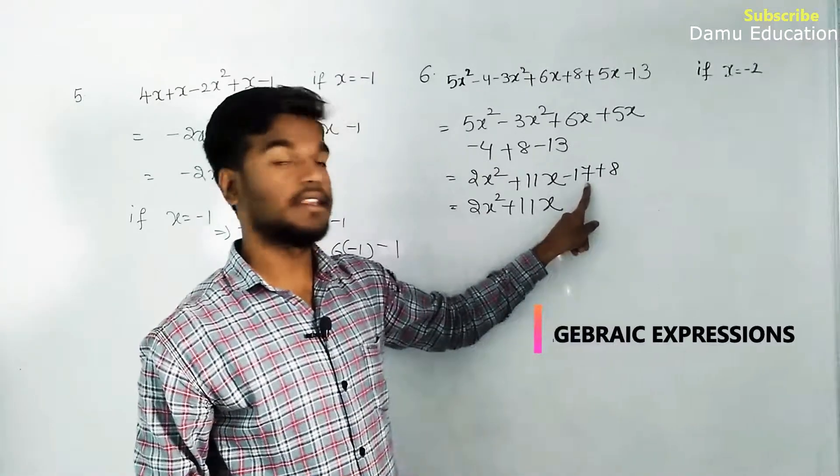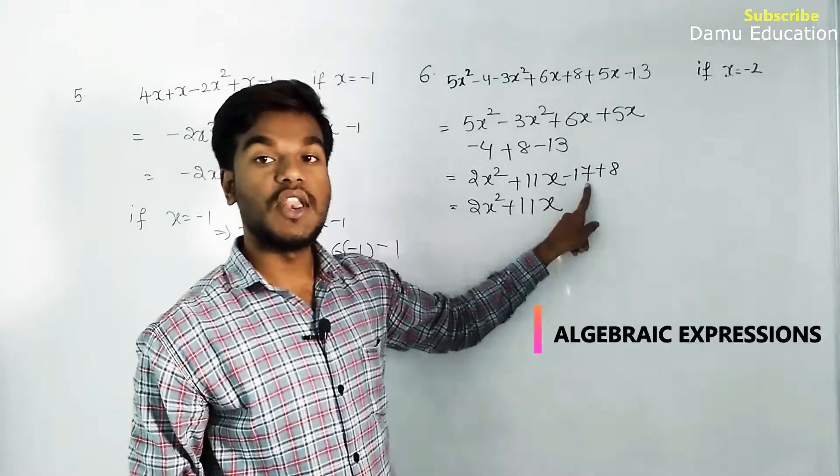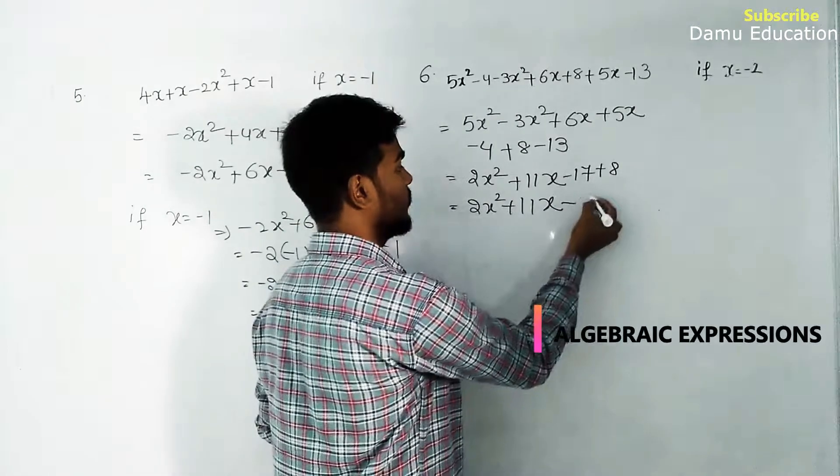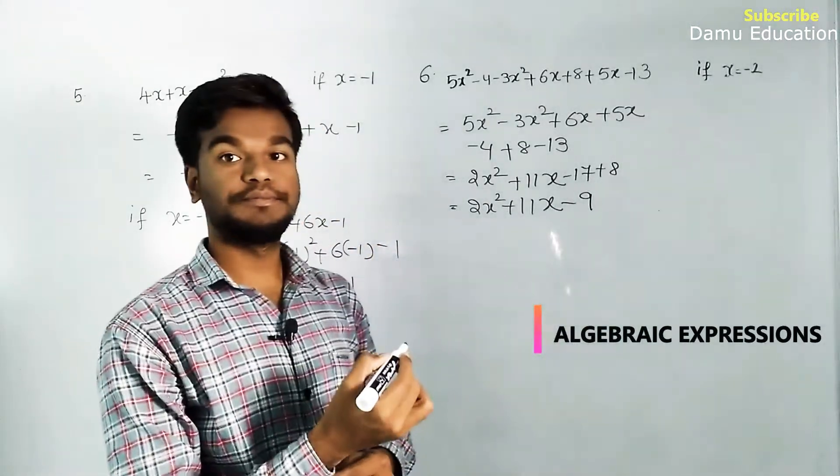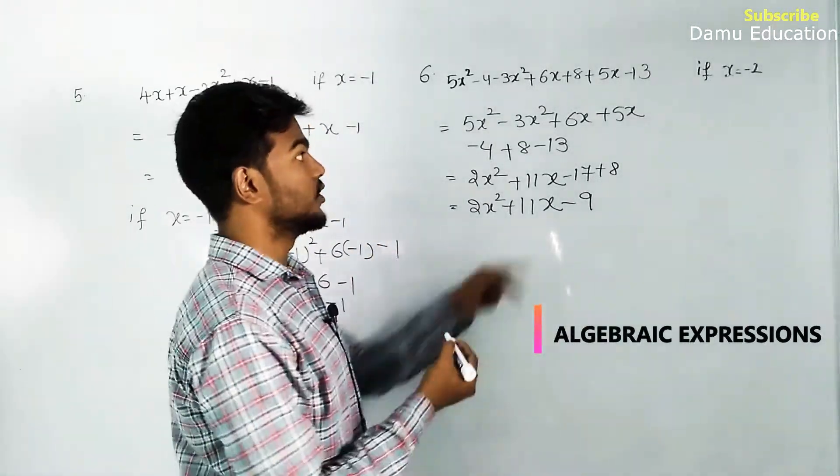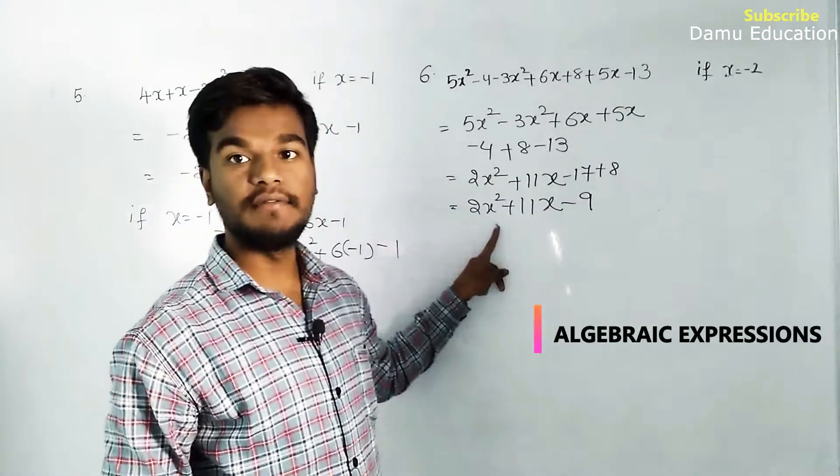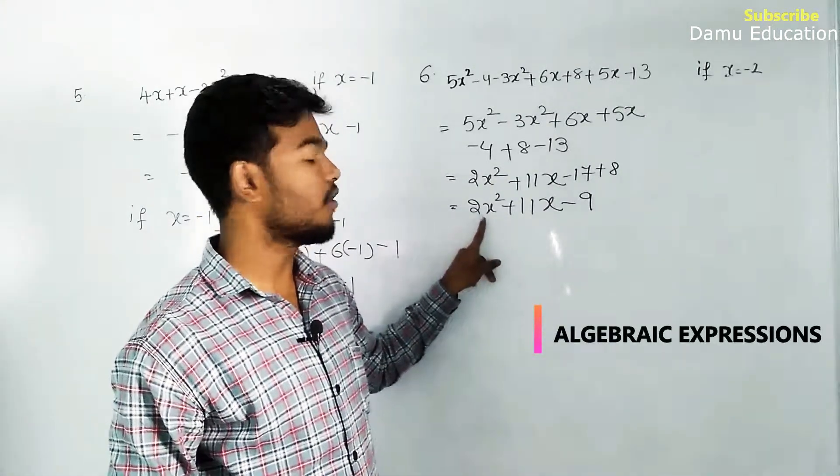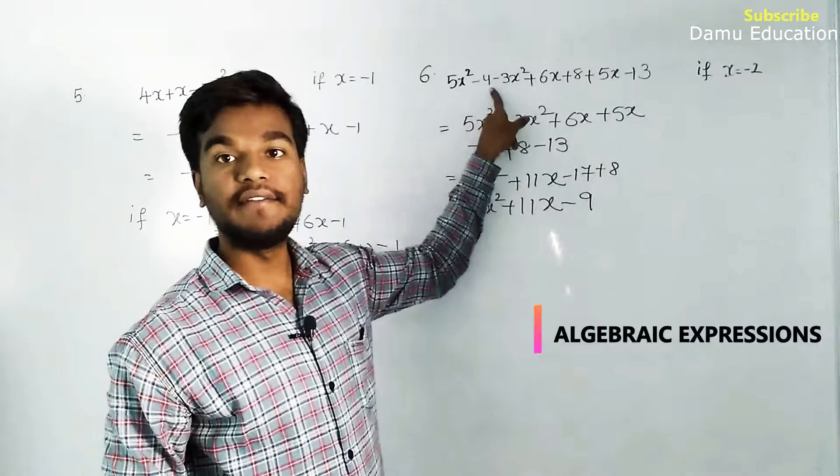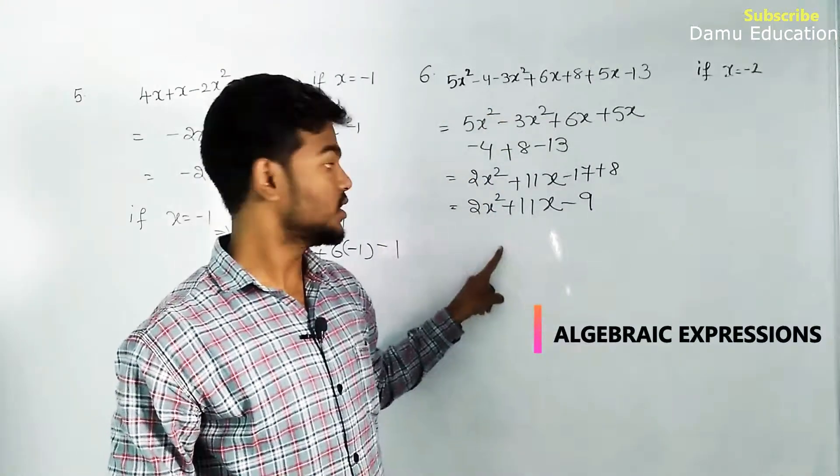2 and 9, so minus 9. This is the simplified form: 2x² + 11x - 9.